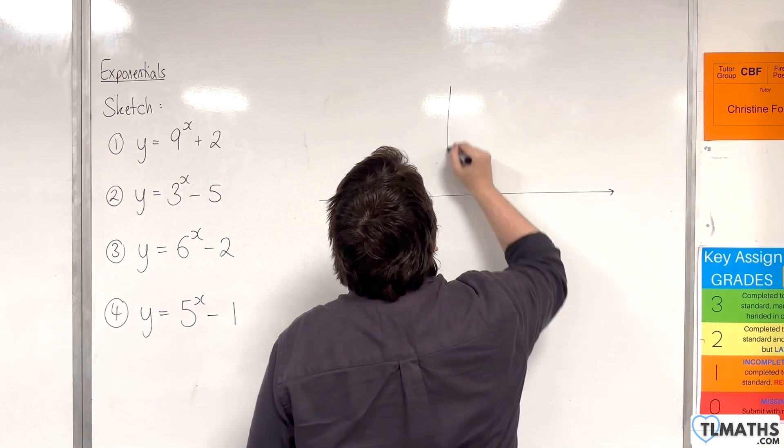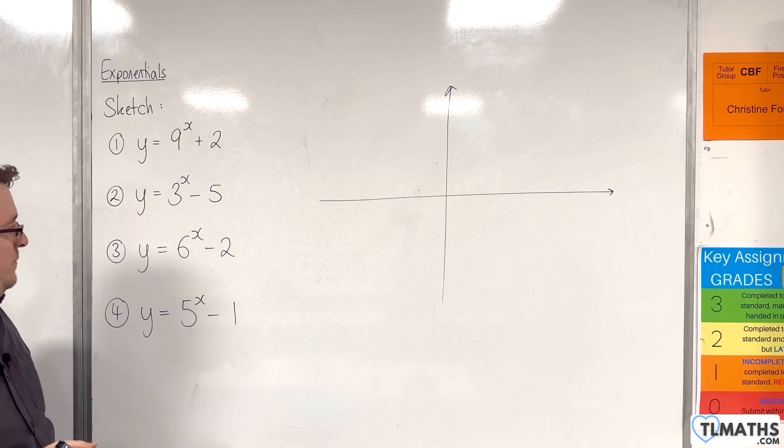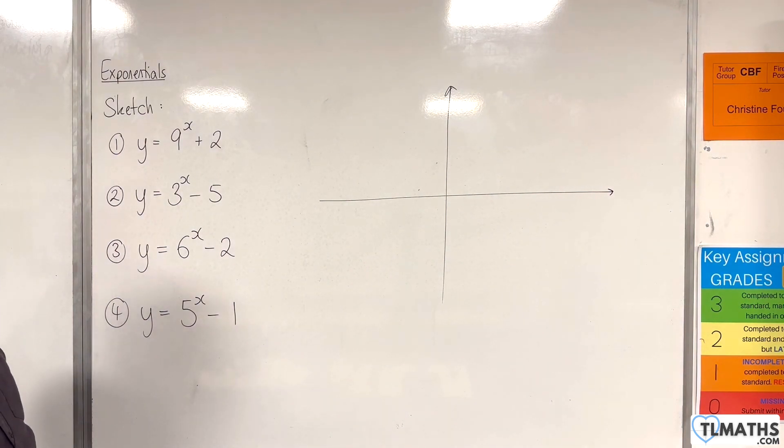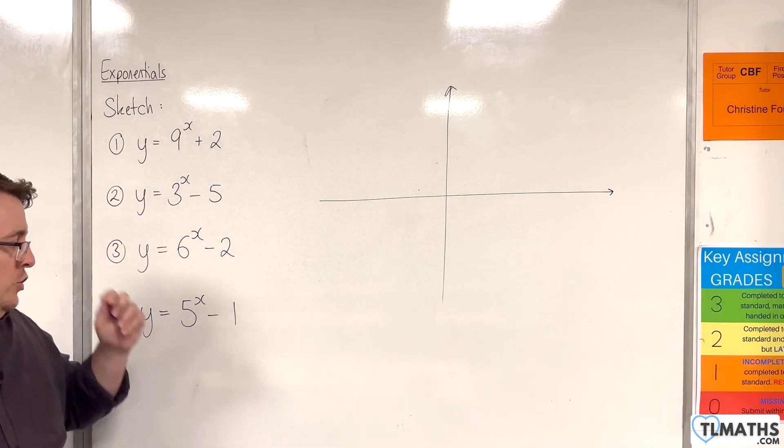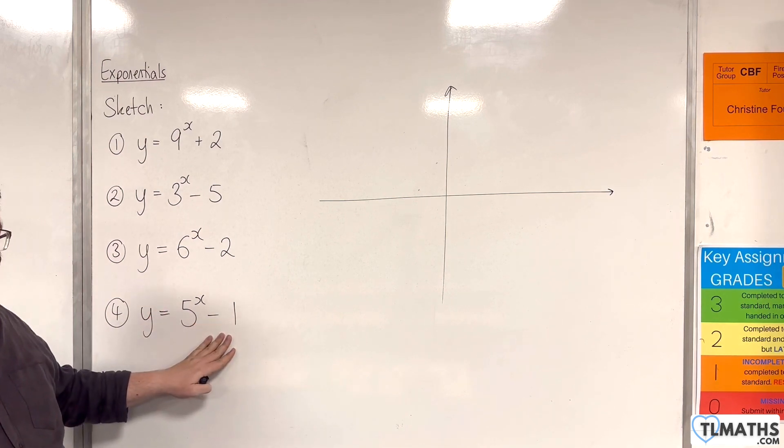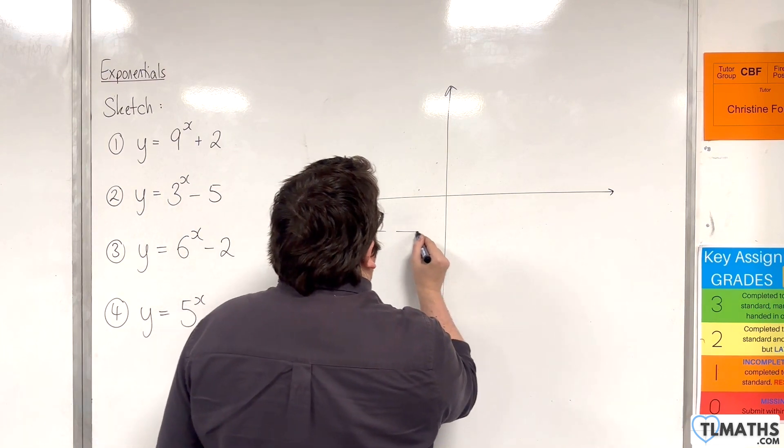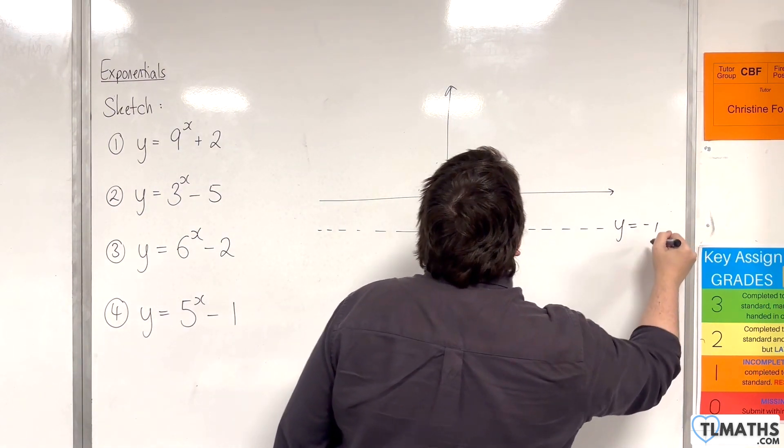Let's look at the fourth one. Now the fourth one is a little bit more tricky. So it doesn't look like it should be, but we've got to be a little bit more careful here. So y equals 5 to the x take away 1. More careful in our sketch. First of all we're going to draw on the horizontal asymptote which will be at y equals minus 1. So y equals minus 1.